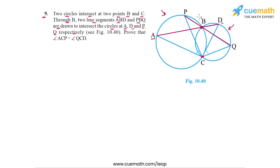The points of intersection with the circles are A and D for one segment, and P and Q for the other. We have to prove that angle ACP and angle QCD are equal. Angle ACP is this angle here, and angle QCD is this angle here.